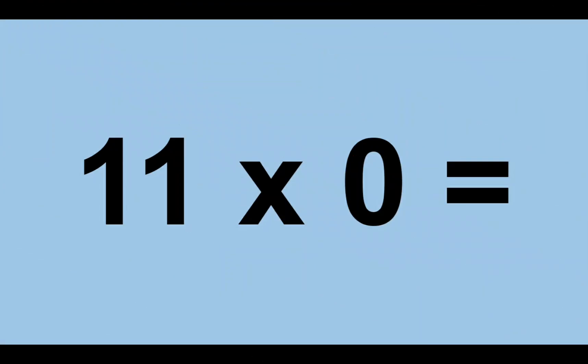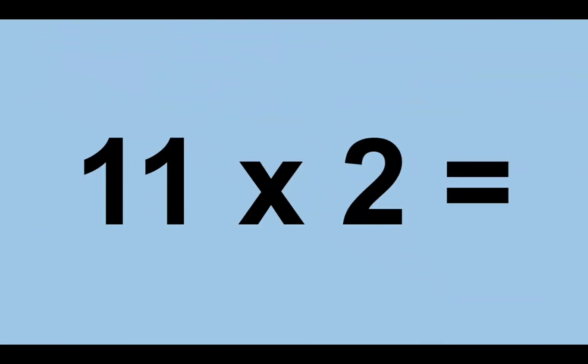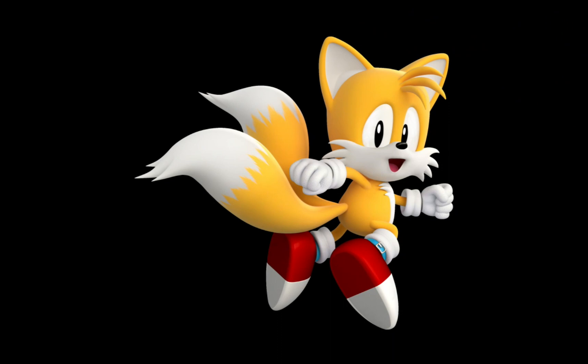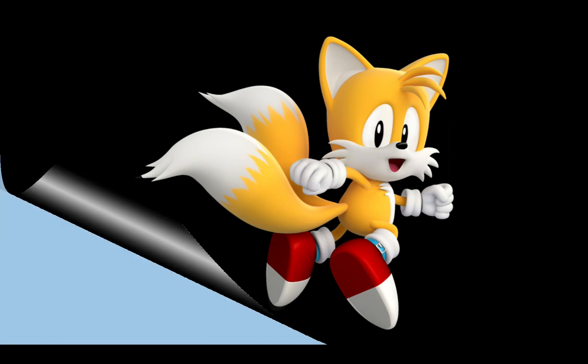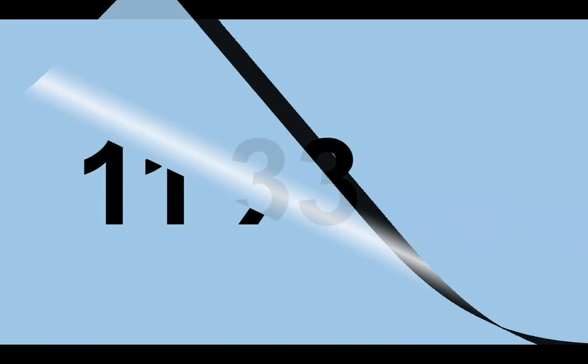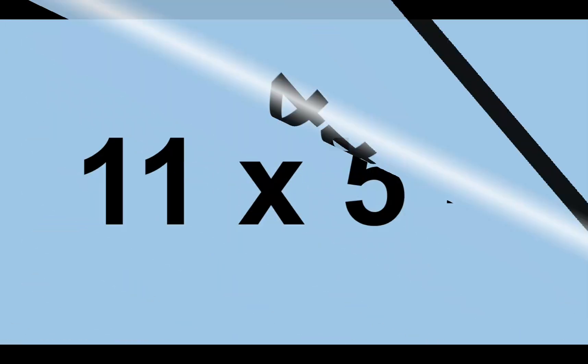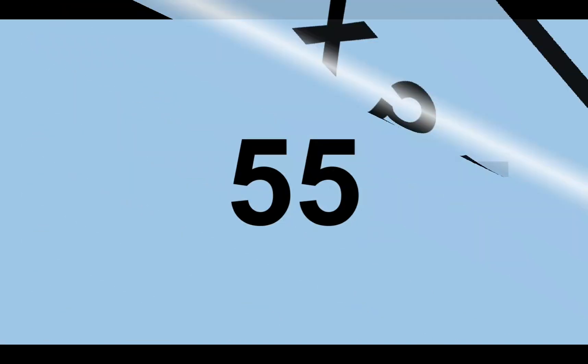Eleven times zero equals zero. Eleven times one equals eleven. Eleven times two equals twenty-two. Eleven times three equals thirty-three. Eleven times four equals forty-four. Eleven times five equals fifty-five.